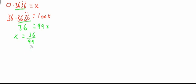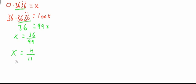9. 9 will always go into 99. 9 goes into 36 four times. So we get 4 over 11 — 99 divided by 9 equals 11. So x equals 4 over 11, and that is the question done.